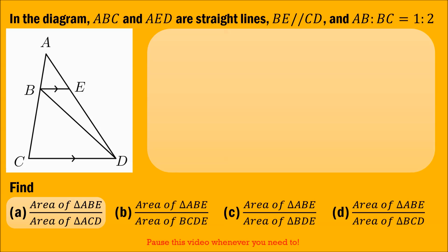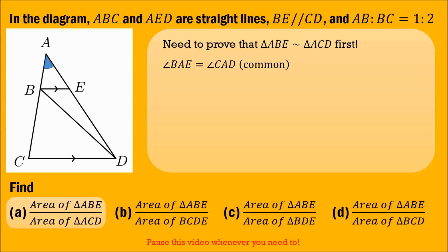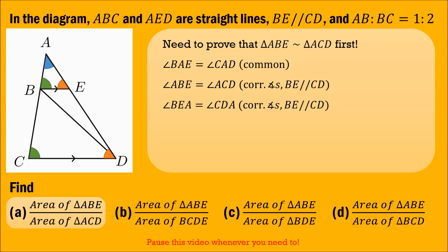Let's take a look at part A. First, we need to prove that triangle ABE is similar to triangle ACD. Angle BAE is the same as angle CAD because they are common. Because BE is parallel to CD, we have two pairs of corresponding angles: angle ABE equals angle ACD, and angle BEA equals angle CDA. Therefore, by the AAA similarity test, triangle ABE is similar to triangle ACD.